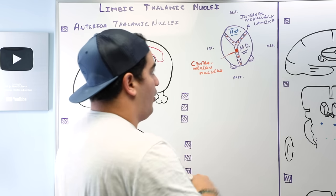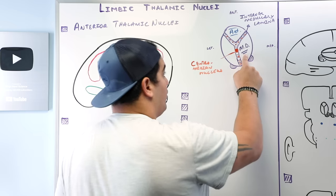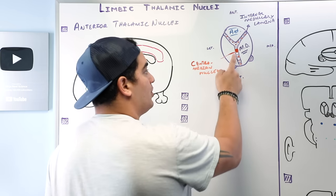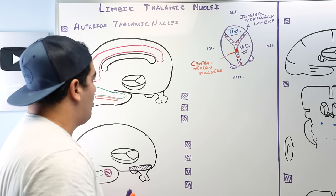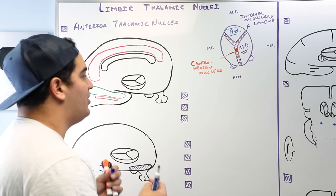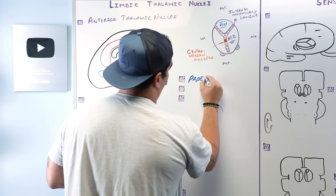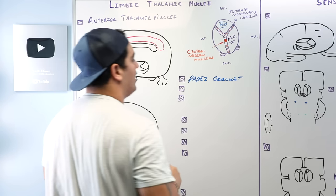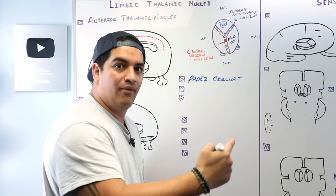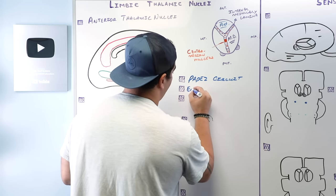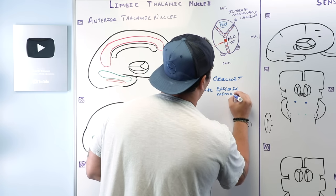So there are three nuclei we're going to focus on for the limbic nuclei of the thalamus: the anterior thalamic nucleus, the mediodorsal nucleus (sometimes called dorsomedial), and the centromedian nucleus — a type of intralaminar nucleus. Let's start with the anterior thalamic nucleus. The key thing to remember is that it's involved in a special circuit called Papez's circuit, which is involved in episodic memory — particularly the emotional involvement of episodic memory, i.e., emotional episodic memory.